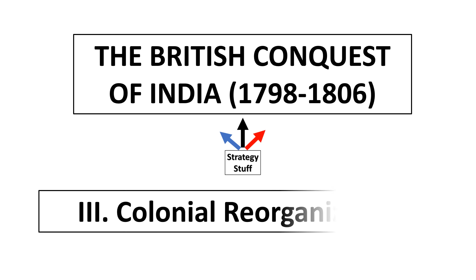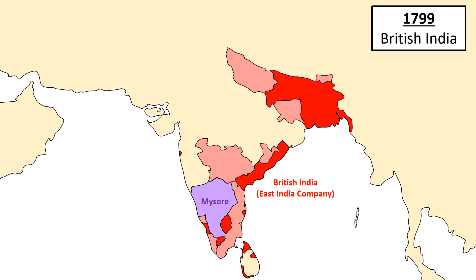Hi, and welcome to Strategy Stuff. This is part three of a five-part series on how, between 1798 and 1807, Britain and its East India Company established a hegemony over India through conquest.